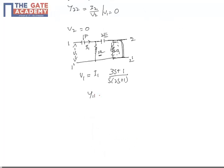So y11, which is i1 by v1, equals s into 2s plus 1 by 3s plus 1. Now we have determined y11. We have to determine y22.